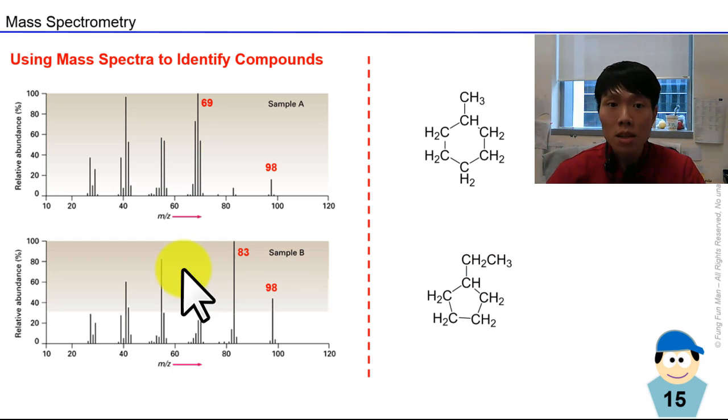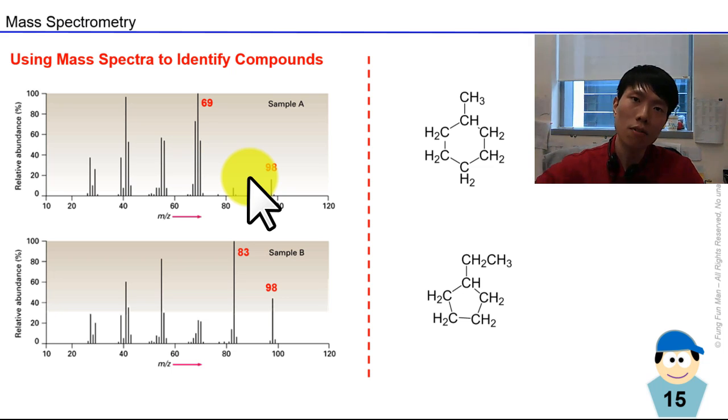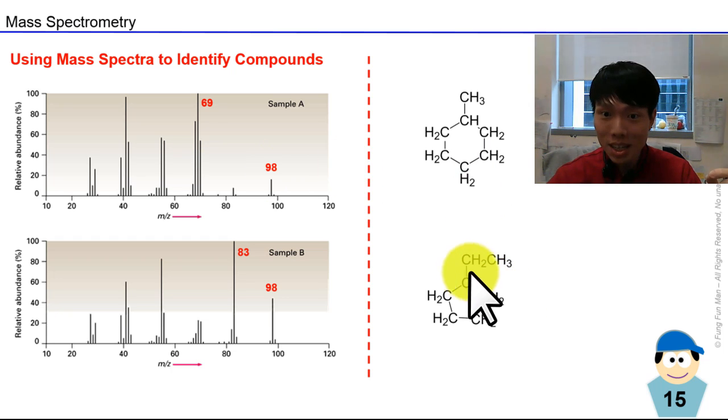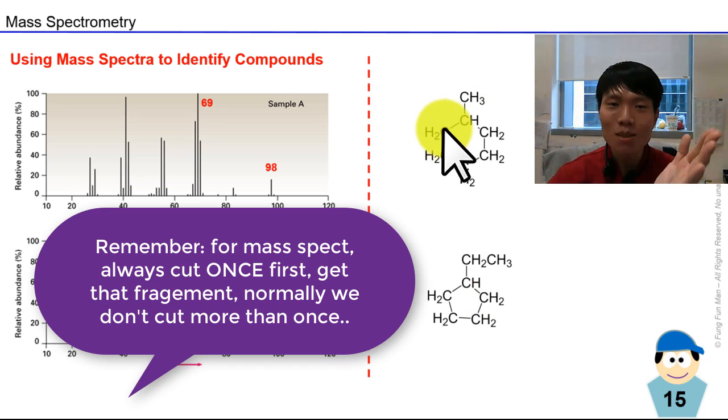Then we look at the other mass spectra. A difference of 29 is for your CH₃CH₂ group - an ethyl group. I need to cut off the ethyl group, and the only place we can do it is right here. Cut it once - tada!